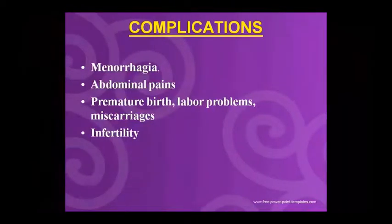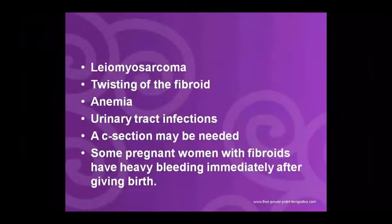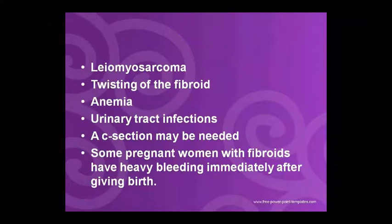In pregnancy, uterine fibroids can cause complications including premature birth, labor problems, miscarriage or abortion, infertility, and may necessitate a C-section. Some pregnant women with fibroids also experience heavy bleeding after birth.